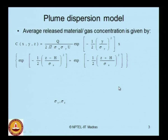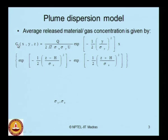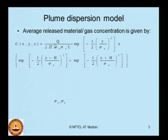The plume model gives the average released material per gas concentration. The equation expresses the average release material in terms of the x, y, z coordinate system, giving the gas concentration. The variables include Q, sigma x, sigma y, u, y, and others, which will be described in detail.